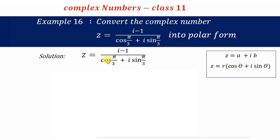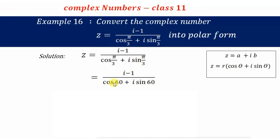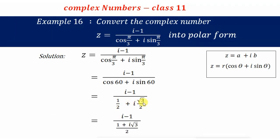Let us pick the given complex number: Z = (i − 1) / (cos π/3 + i sin π/3). Now cos π/3 is cos 60° and sin π/3 is sin 60°. Let us put these values in: cos 60° is 1/2 and sin 60° is √3/2.